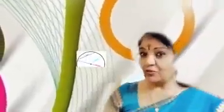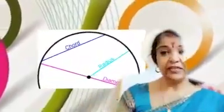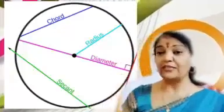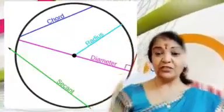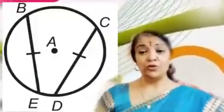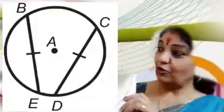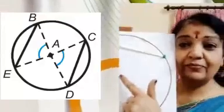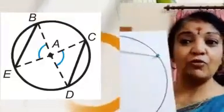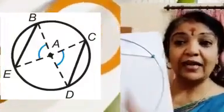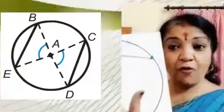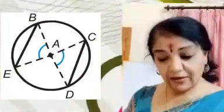The first theorem deals with chords. A chord is the distance between any two points on a circle, and the longest chord passing through the center is the diameter. Here the first concept is: if you draw any two equal chords — here I have drawn two equal chords, this is one chord and this is the other chord — these two equal chords make equal angles at the center.